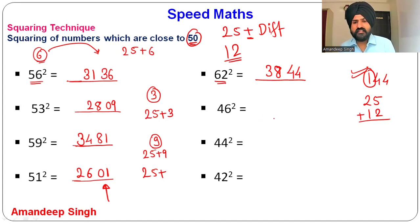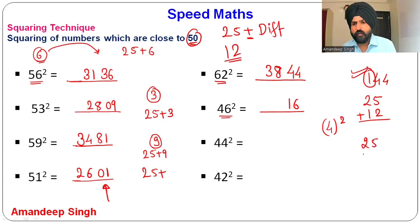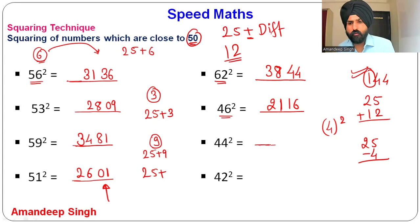For 46²: this number is 4 less than 50. 4² = 16, write 16. Since it is less than 50, subtract: 25 − 4 = 21. So 46² = 2116.